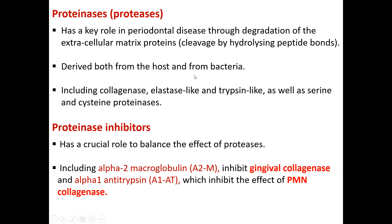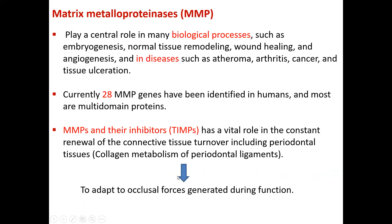This stimulates various kinds of inflammatory changes within the tissue, and not only about disease — even different biological activities including healing and carcinogenesis are very important in terms of collagenases and proteinases: carcinogenesis, healing, blood coagulation systems, and different kinds of biological activities. So as we said, these inhibitors have the role to balance the effect of proteinases. For example, alpha-2 macroglobulin inhibits collagenases, and alpha-1 antitrypsin has the ability to inhibit the effect of PMN collagenases.